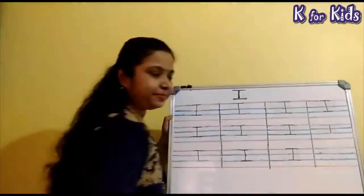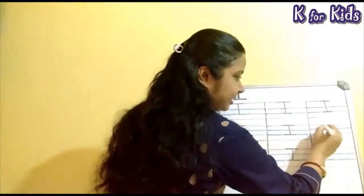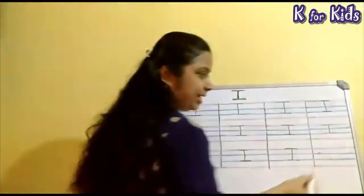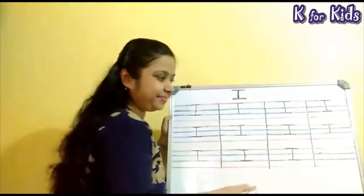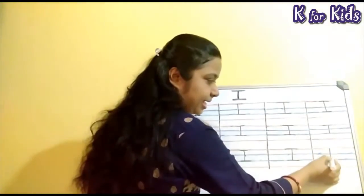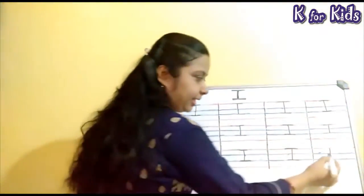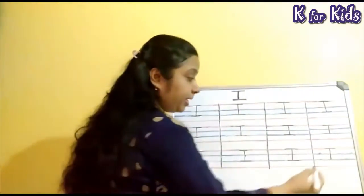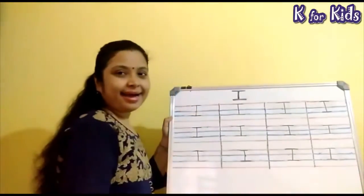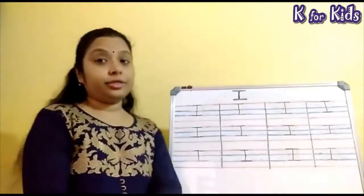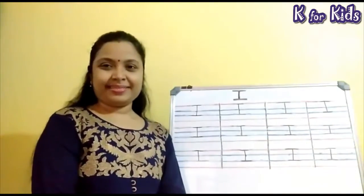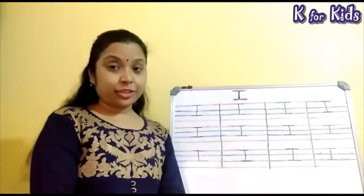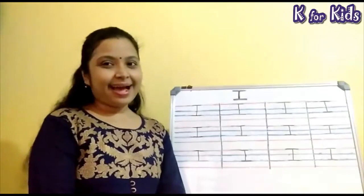Standing line. Sleeping line. Sleeping line. Eye. First make a standing line, and then at the top make a sleeping line, then make another sleeping line at the bottom. Eye. Children, are you writing? Yes. Very good. Children, keep writing. The more you practice, the more perfect you can write the alphabet I.